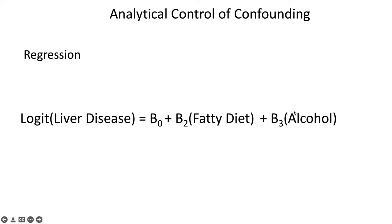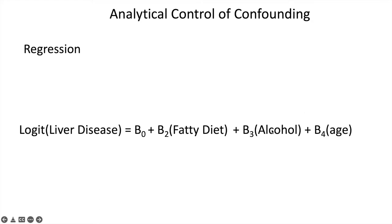When I said before that matching doesn't permit you to look at the effect, this is what I mean — here we can both control for alcohol while also knowing its relationship with the outcome, which might be of interest. Another reason regression is better than Mantel-Haenszel is that it permits you to have more than one confounder. So if we thought age was also a confounder, now we have the impact of fatty diet on liver disease independent of alcohol and independent of age.